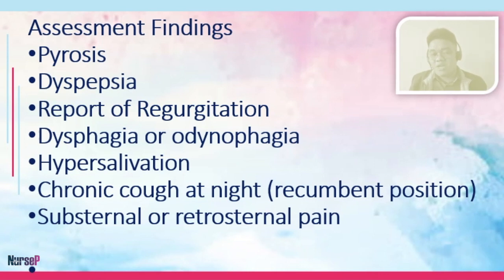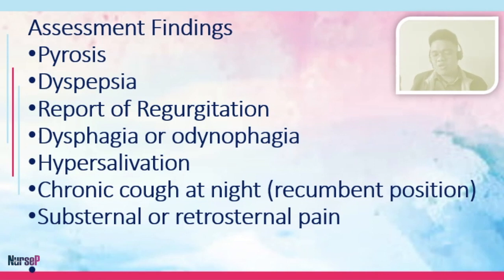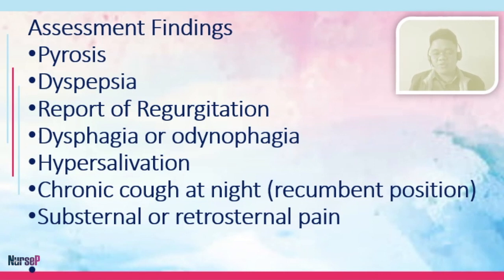Among these assessment findings, if they continue to persist, the possible sequelae are as follows. There will be dental erosion, especially if the acid goes back out to the mouth. There will be ulcerations — on the stomach, on the pharynx, or on the esophagus. Laryngeal damage is also more likely. Then there will be esophageal strictures — the possibility of the esophagus closing — and pulmonary complications if these signs and symptoms are not managed early.